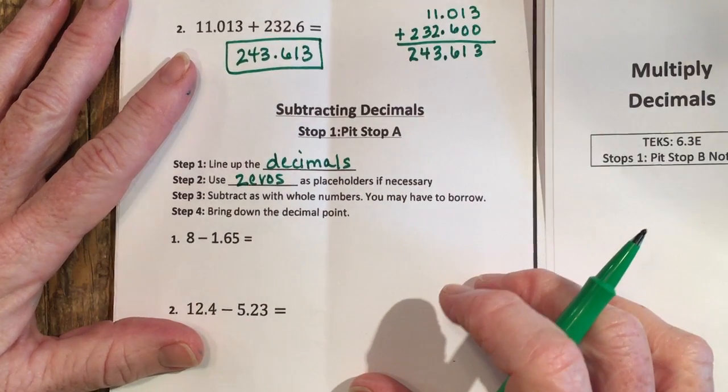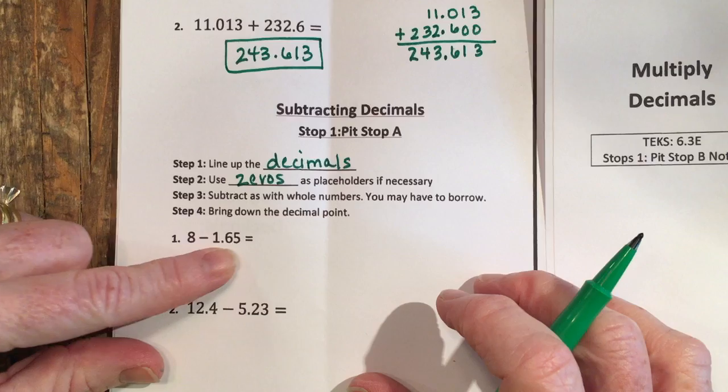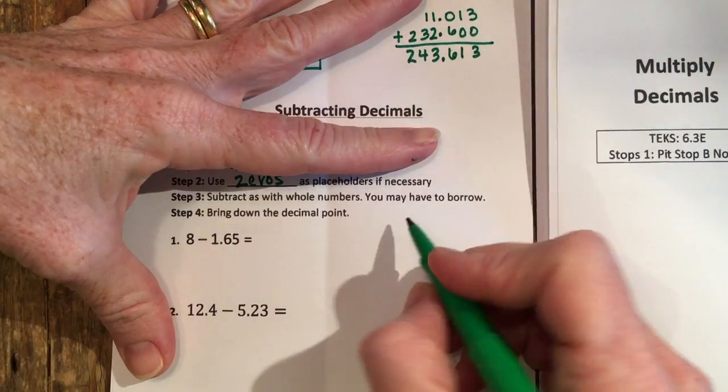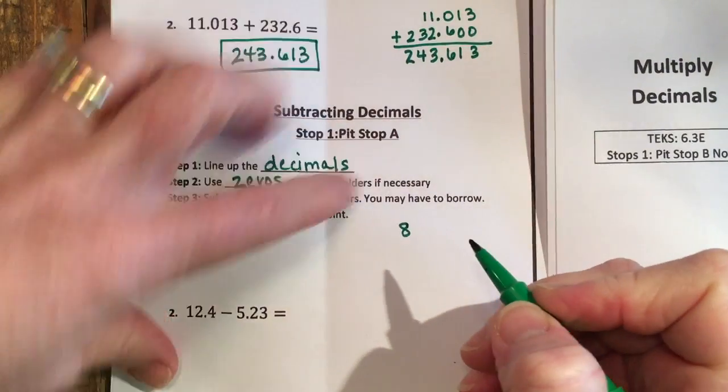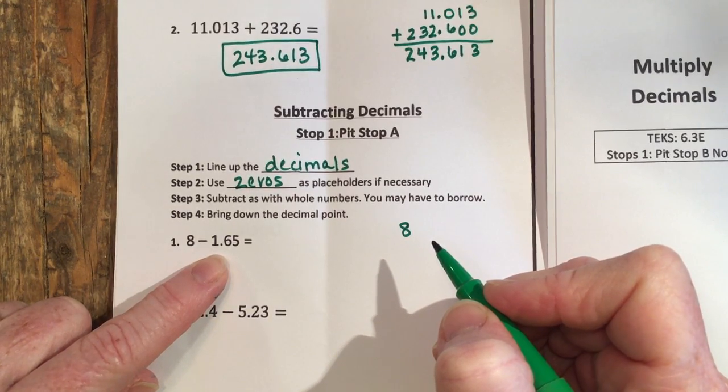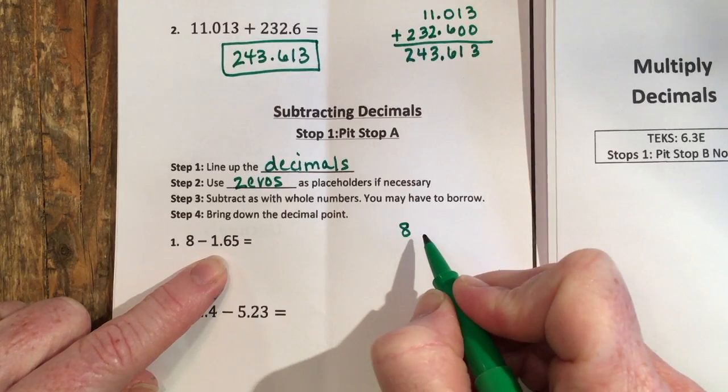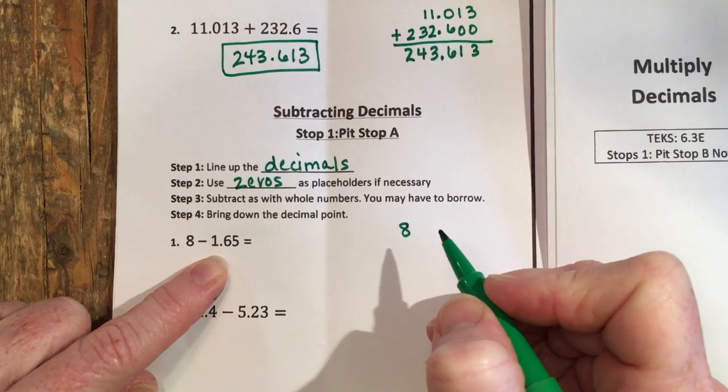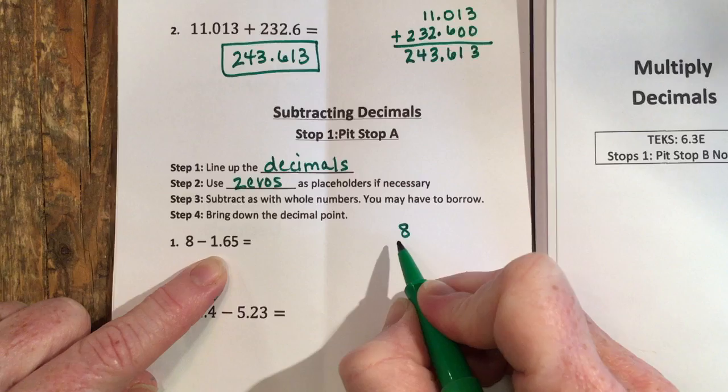So in the first example I have 8 minus 1.65. Now this one may be tricky for some of you because 8 has no decimal, and it's hard to know how to line up the 1.65. We have to know where the decimal is in 8. And in this problem, if I put the 8, I have two choices: I can put it in front or the back.